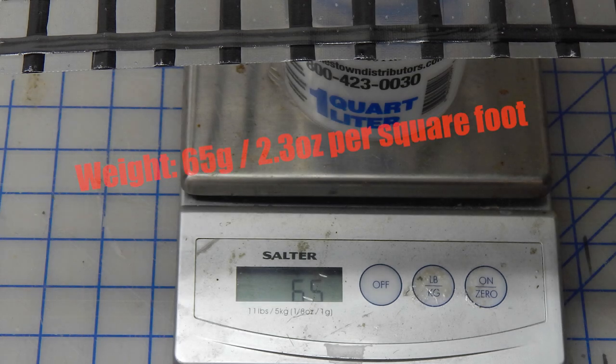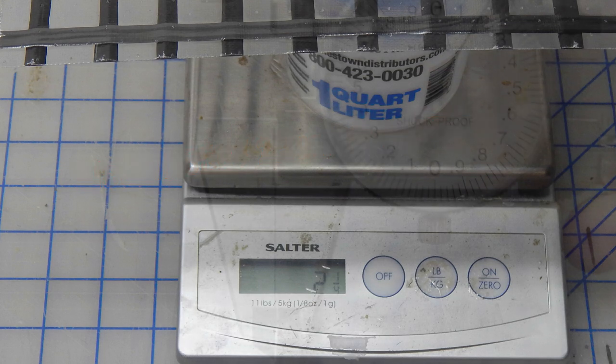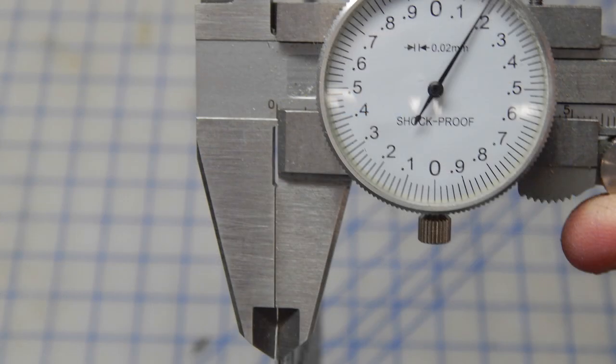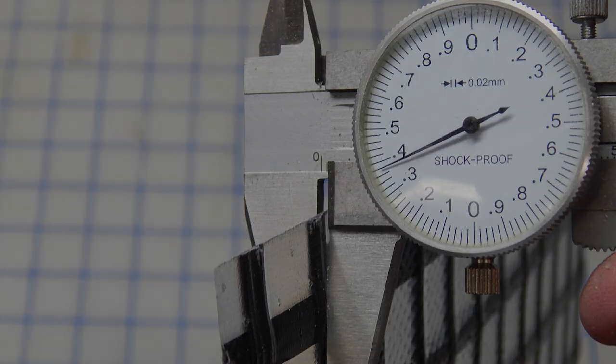So I weighed it up. The one foot square panel is 65 grams or 2.3 ounces, which is pretty light. Just the glass is 0.2 millimeters thick, and across two tows relatively thick, about 1.4 millimeters.